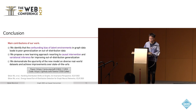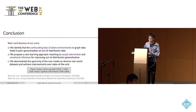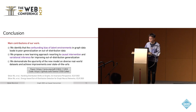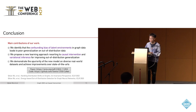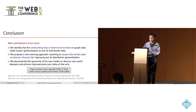In conclusion, this work focuses on the out-of-distribution generalization problem on graphs. We identify that the confounding bias of latent environments in graph data is a key factor causing poor generalization. We propose a new learning approach using causal intervention and variational inference, leading to a new learning objective and modified model architectures. Experiments on diverse real-world datasets demonstrate improvements over state-of-the-art. Links to our paper and code are available. Thank you.